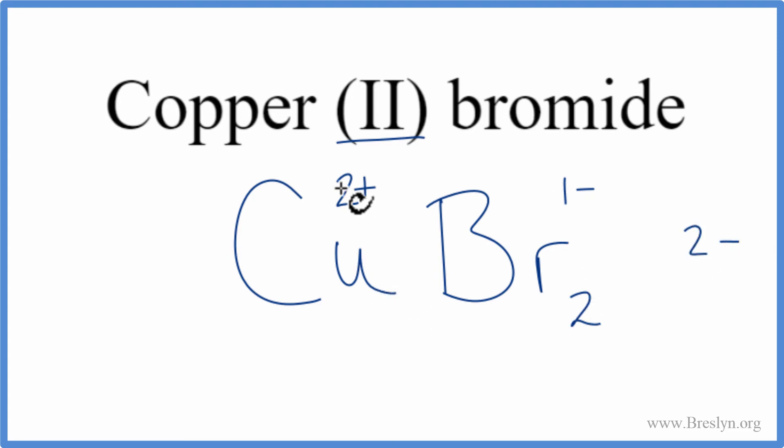One copper, one times two plus. That's two plus. So a two plus and a two minus, that adds up to zero. The net charge is zero. This is the correct formula for copper two bromide.